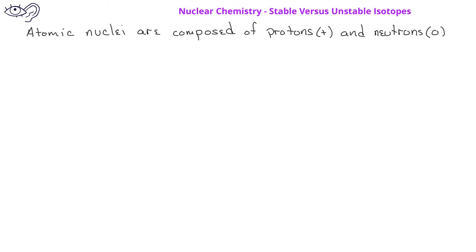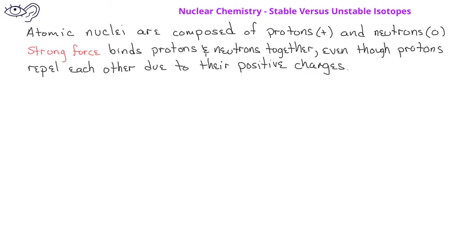In previous videos, we learned about different types of nuclear decay, but we were not able to answer why one decay process will take place instead of another. Atomic nuclei are composed of protons and neutrons. Since protons, with positive charges, tend to repel each other, what keeps the nuclei together? A fundamental force known as the strong force binds protons and neutrons together and is a result of attraction between all protons and neutrons in a nucleus. This strong nuclear force is balanced by the repulsive Coulombic force of the protons in the nucleus.